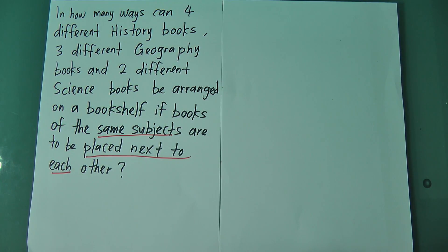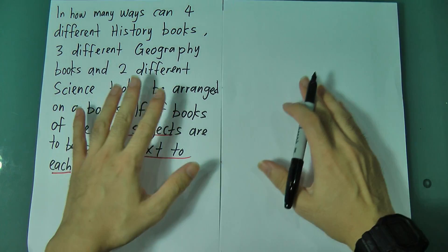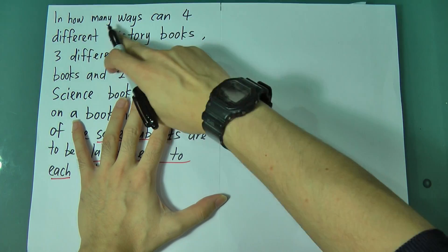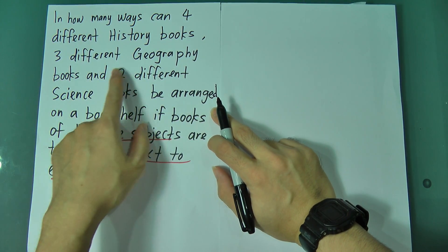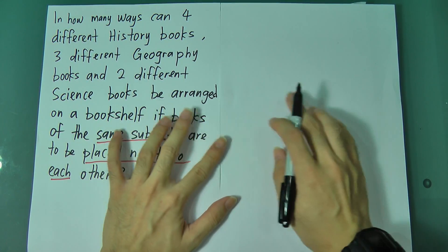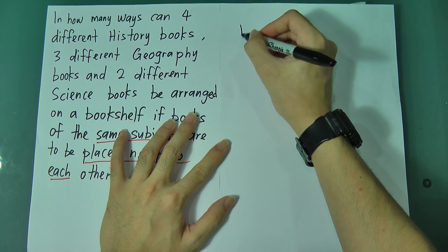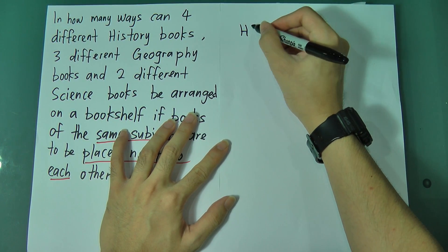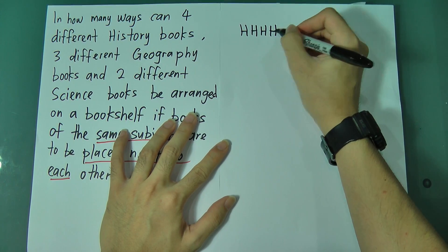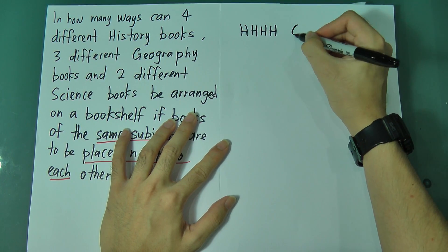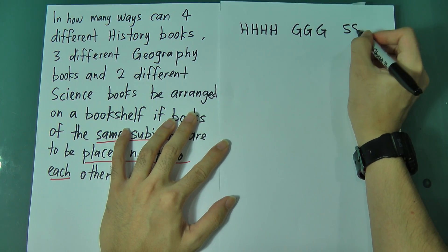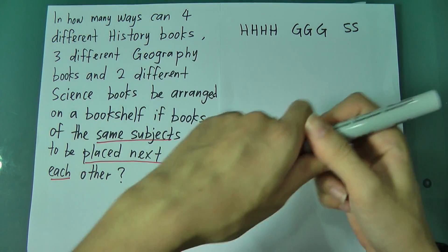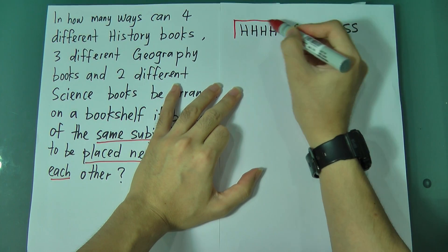The keyword is: the same subjects must be placed next to each other. So I will group the 4 history books together, group the 3 geography books together, and the 2 science books together. Basically, this is the way I group them together as one.